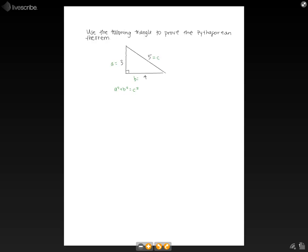So now we plug this into our equation. We have 3 squared plus 4 squared equals 5 squared. So that's 9 plus 16 equals 25. 9 plus 16 equals 25. So 25 equals 25, and we see that the theorem is correct.